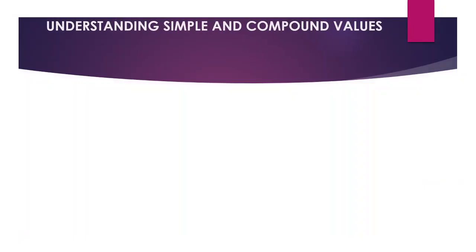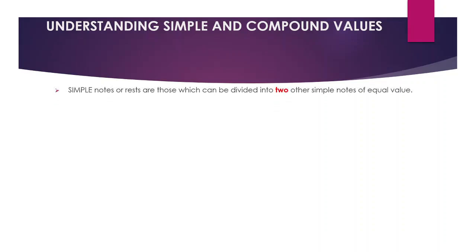Before we dive into time signatures, we need to understand simple and compound values — we've covered this before. Simple notes or rests are those which can be divided into two other notes, i.e., split in half. A crotchet can be split in half and it equals two quavers, so therefore it's a simple note. This also applies to rests.